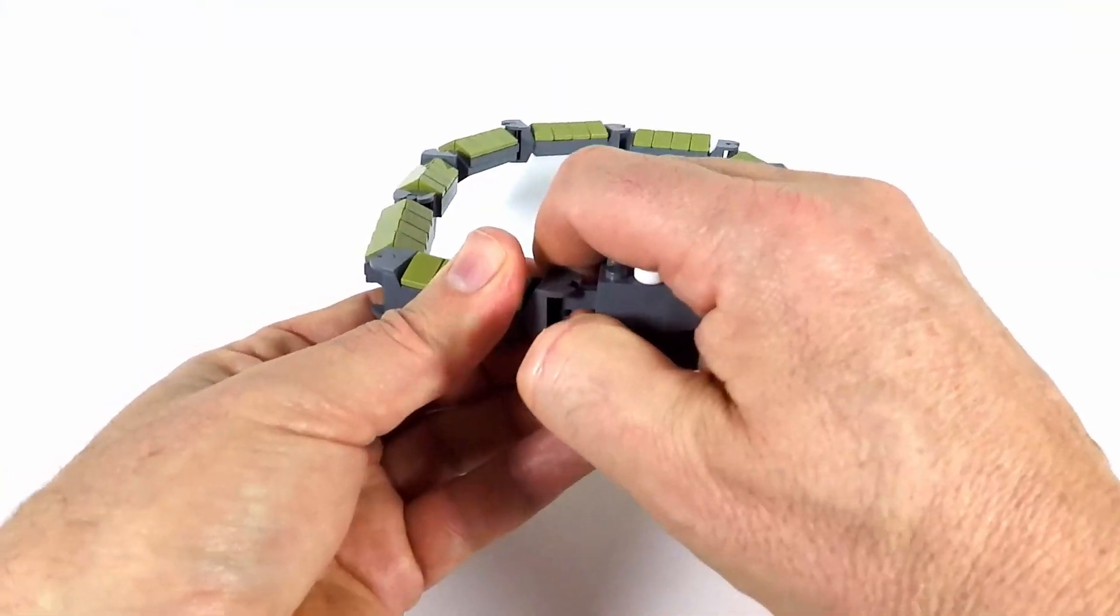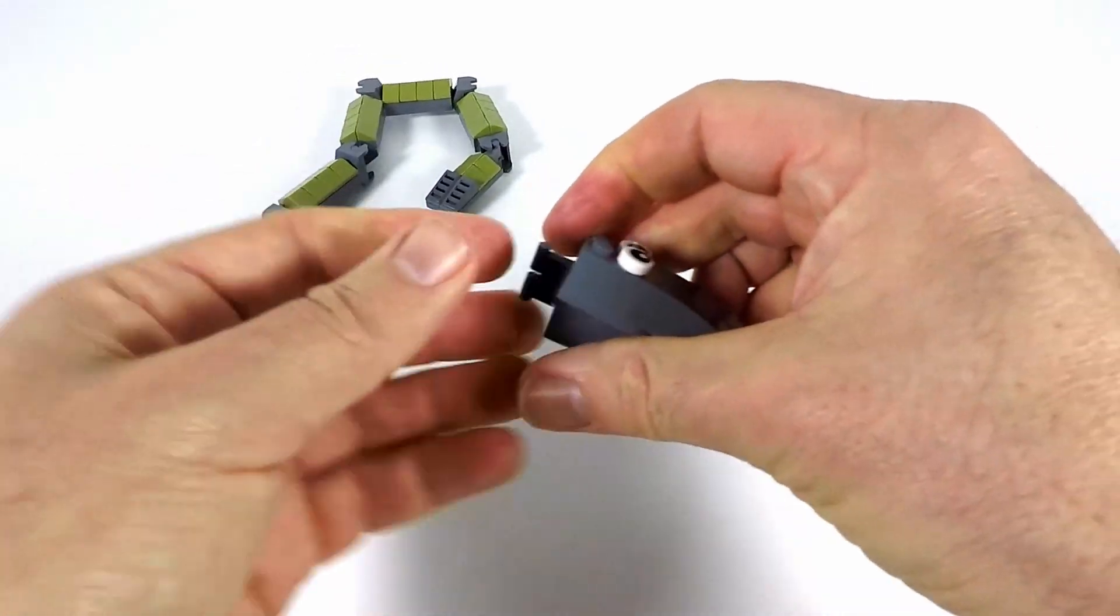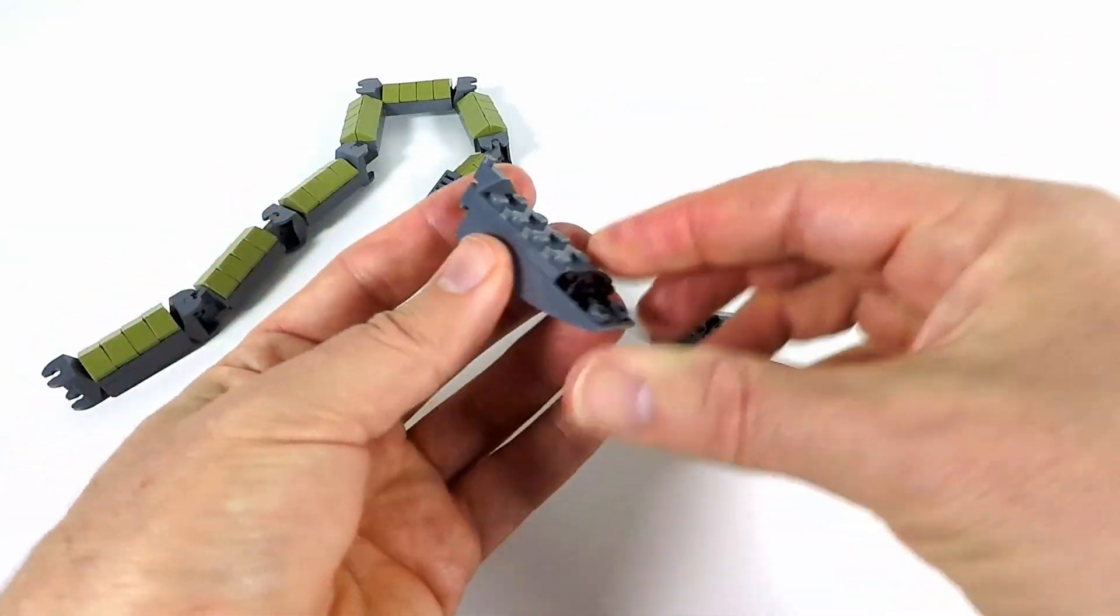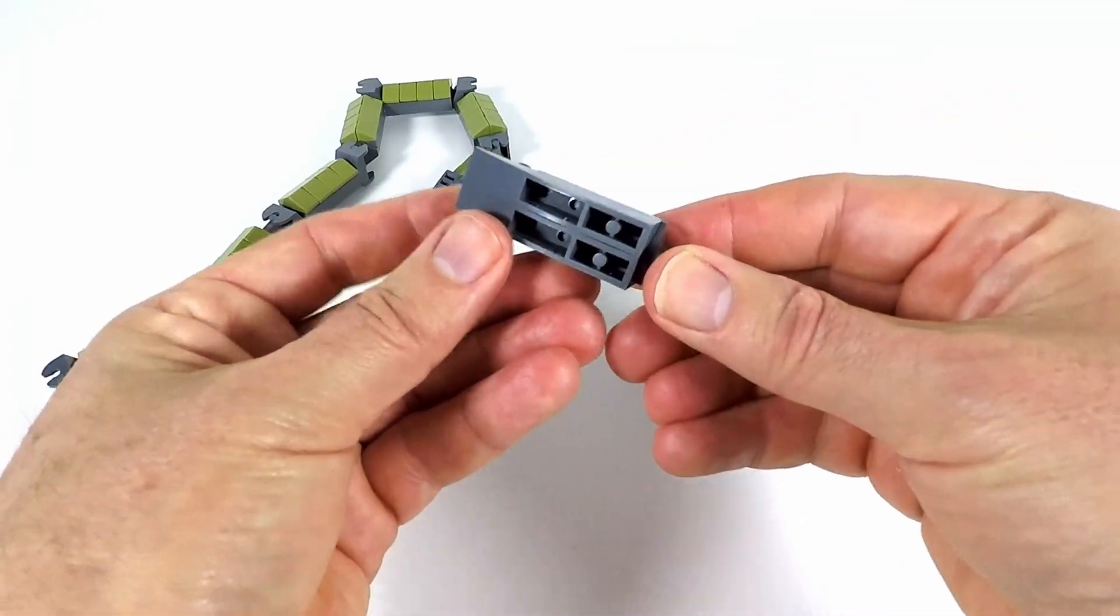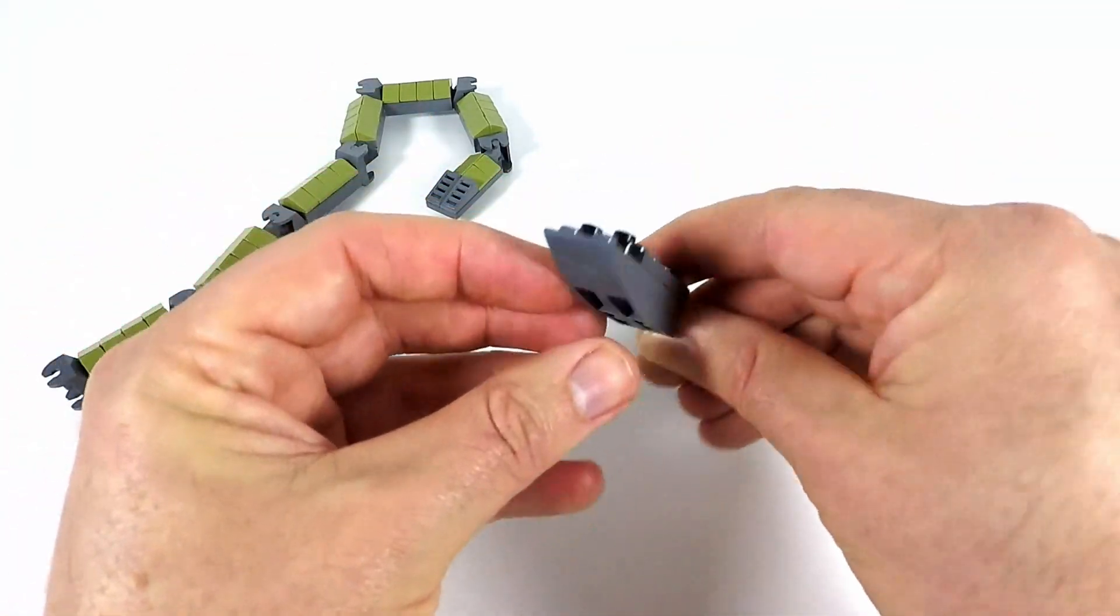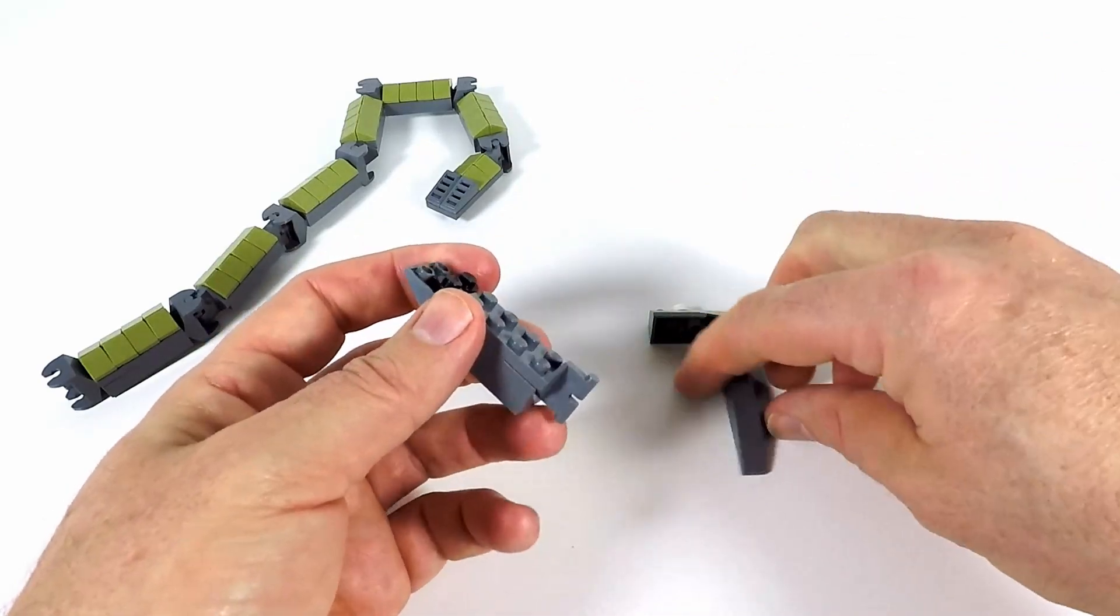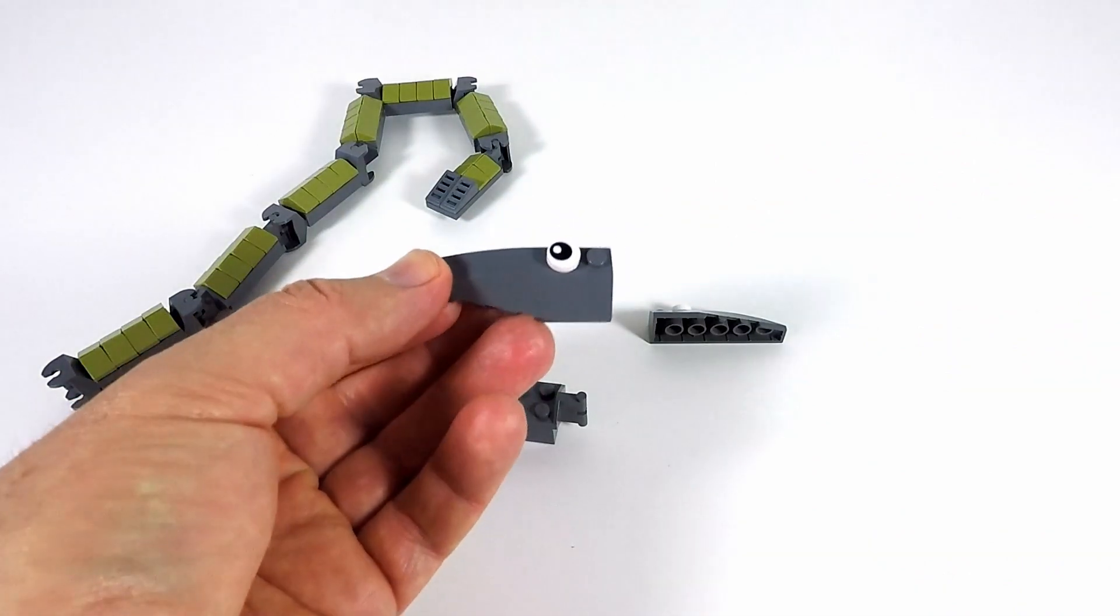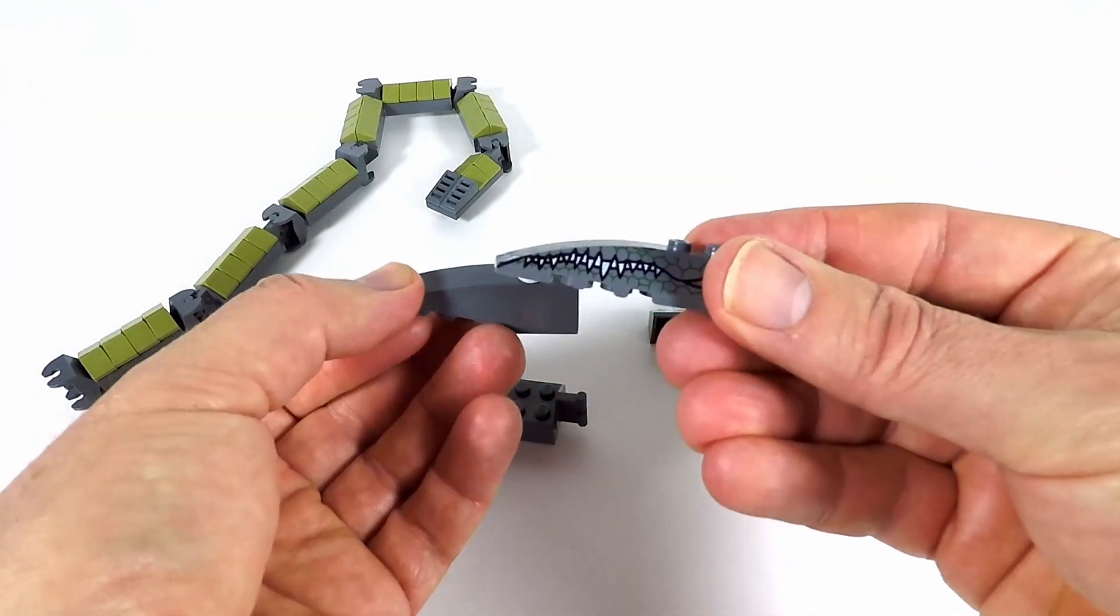The head's just made up of these slope pieces. Again, it's another one of these plates. And I've just got some inverted slopes at the bottom. I put a couple of studs in there for the teeth. And I found these pieces in my Lego. I'm not really sure where they're from, but I also found this guy.